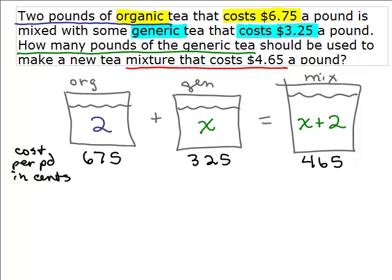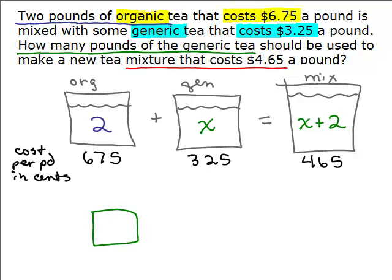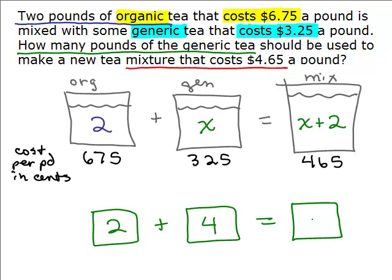Before solving this, let's say we didn't know how to solve it and we're just going to take a guess. Let's say I want to mix in 4 pounds of generic tea. I know there's 2 pounds of organic, so that would give me 6 pounds total. The prices are 675 a pound for organic, 325 a pound for generic, and 465 a pound for the mixture.